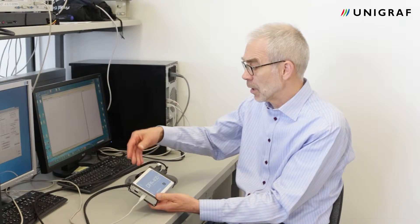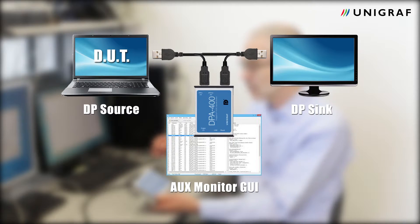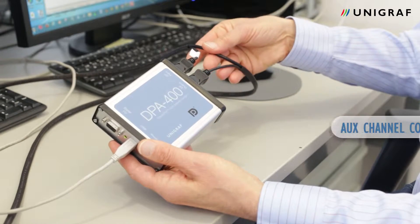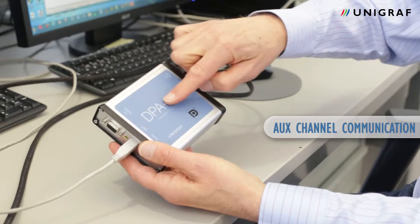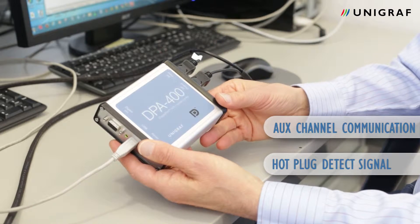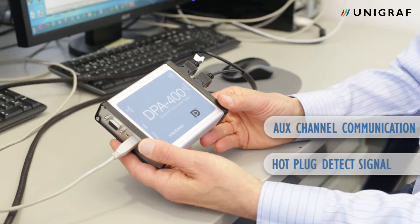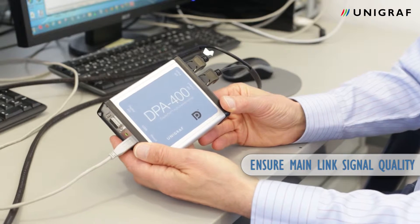DPA400 is connected between a DisplayPort sink and a source using a special cable where we feed only the AUX channel and the hot plug detect signal through the equipment itself. This is for maintaining the quality of the main lane signal.